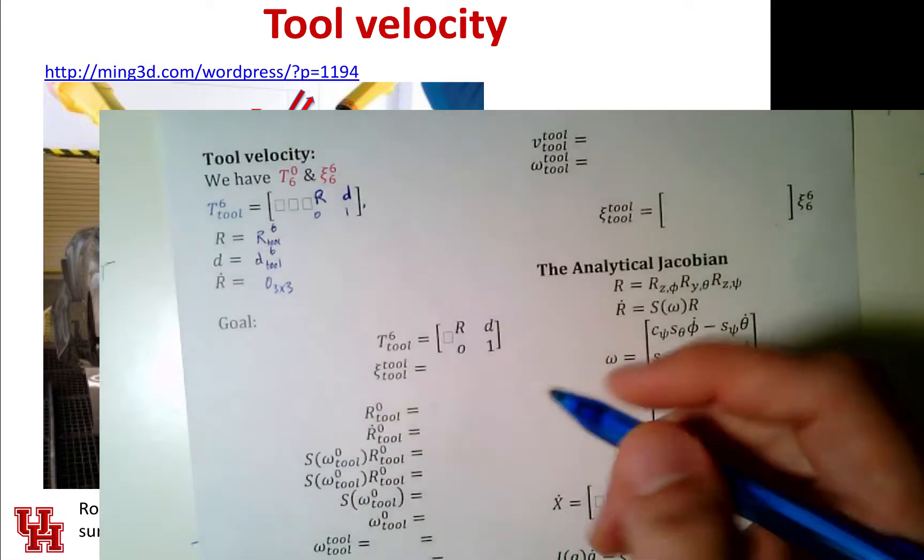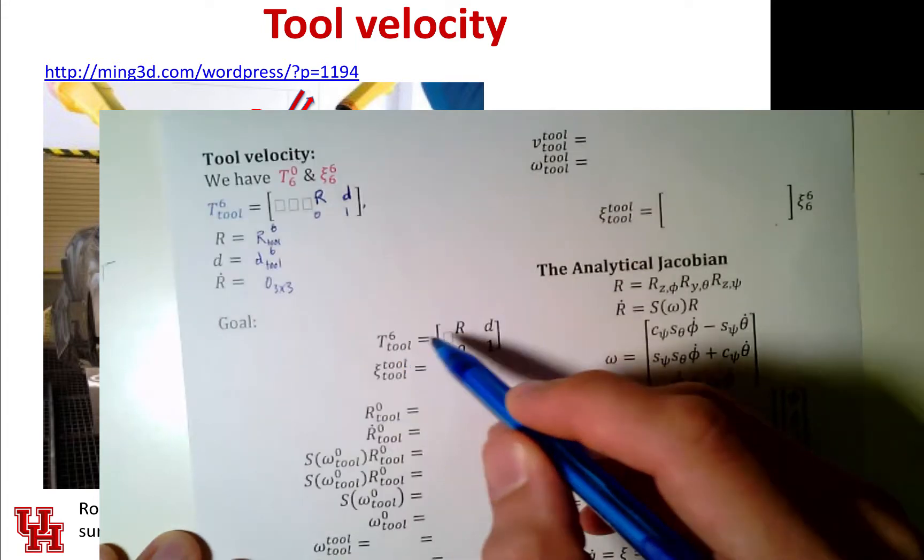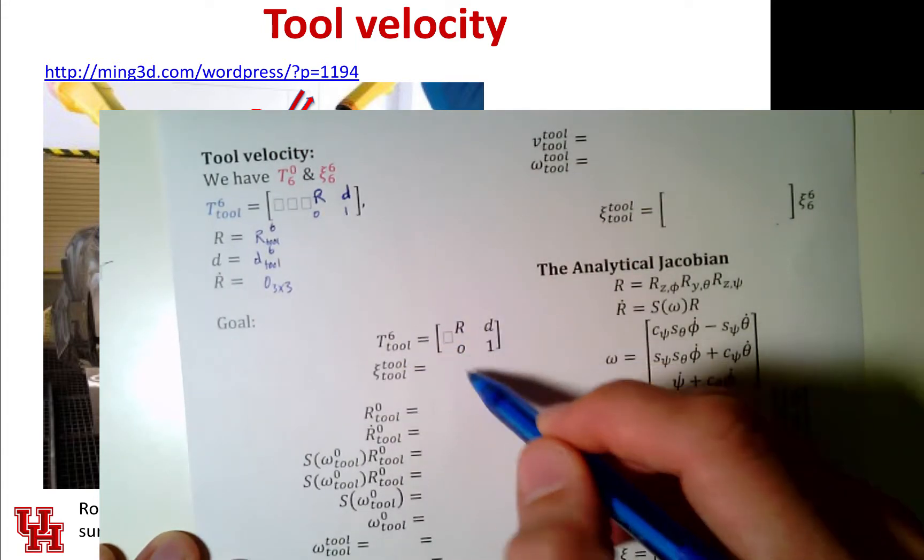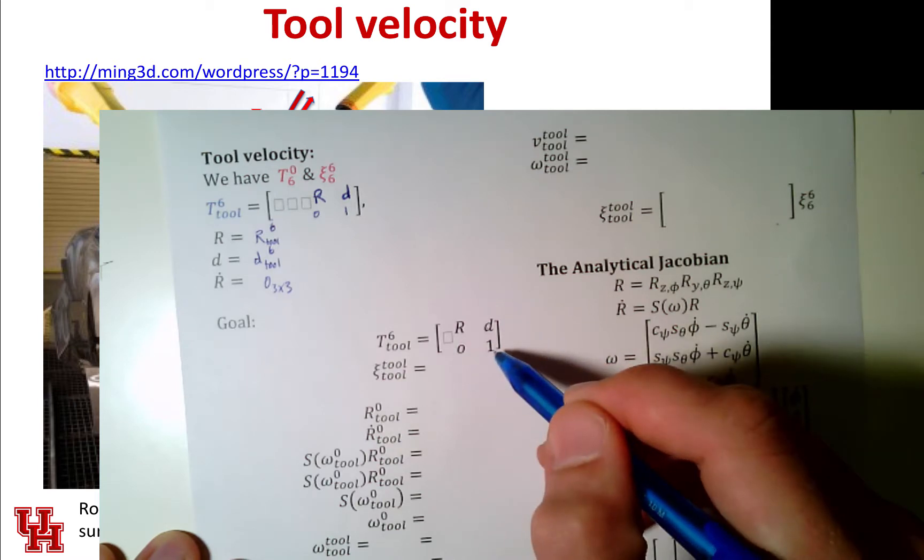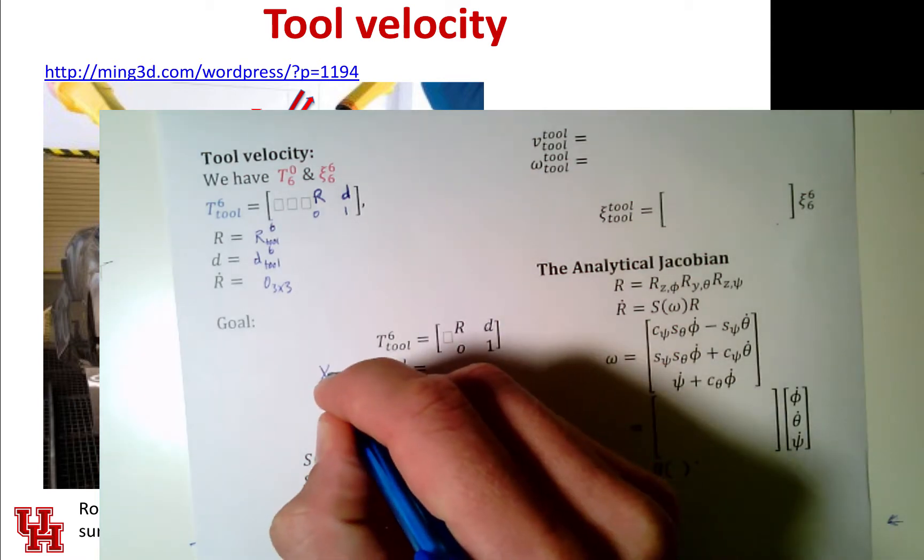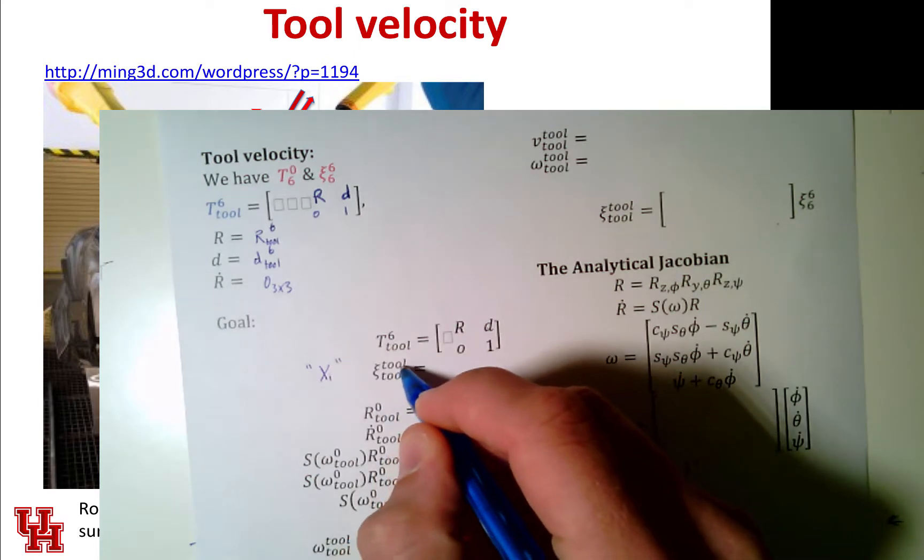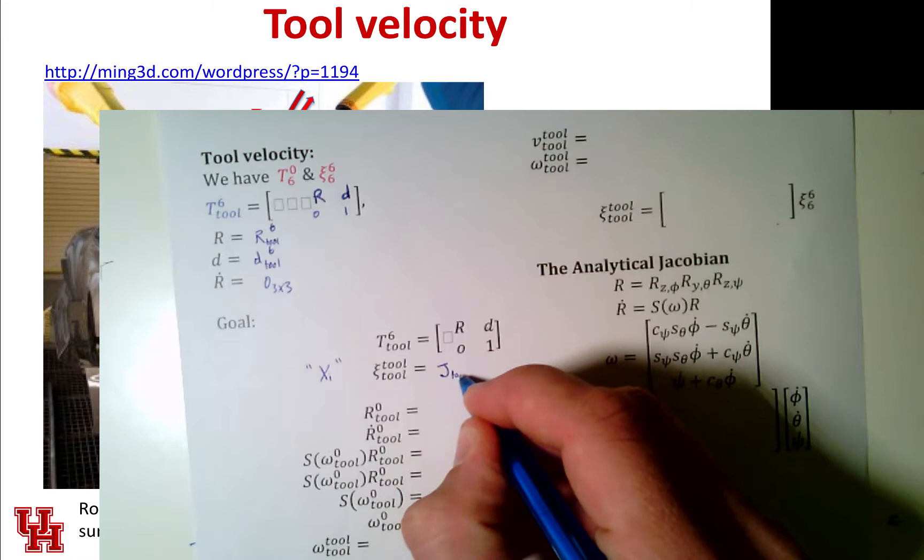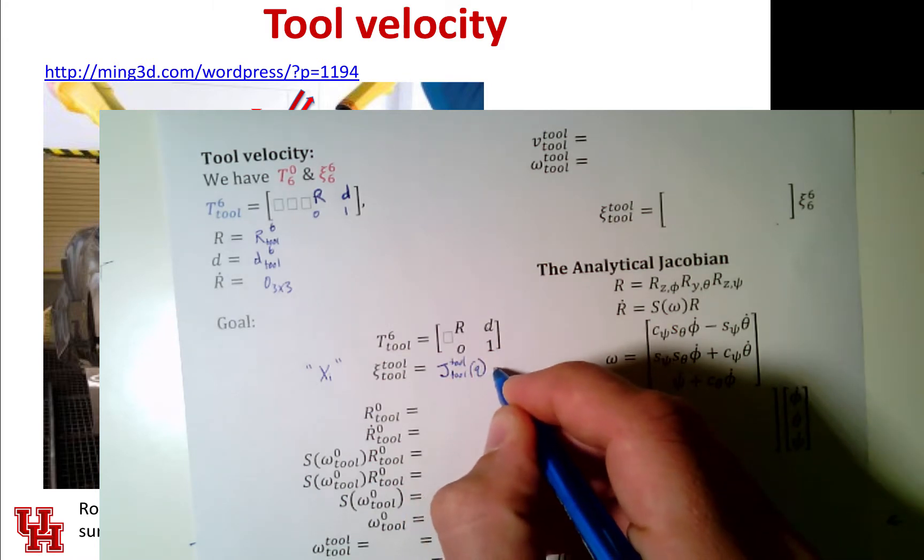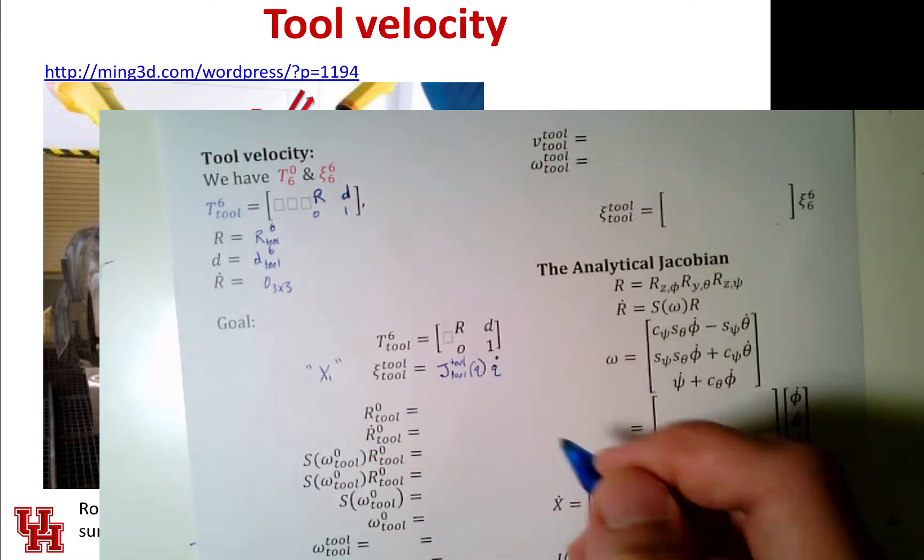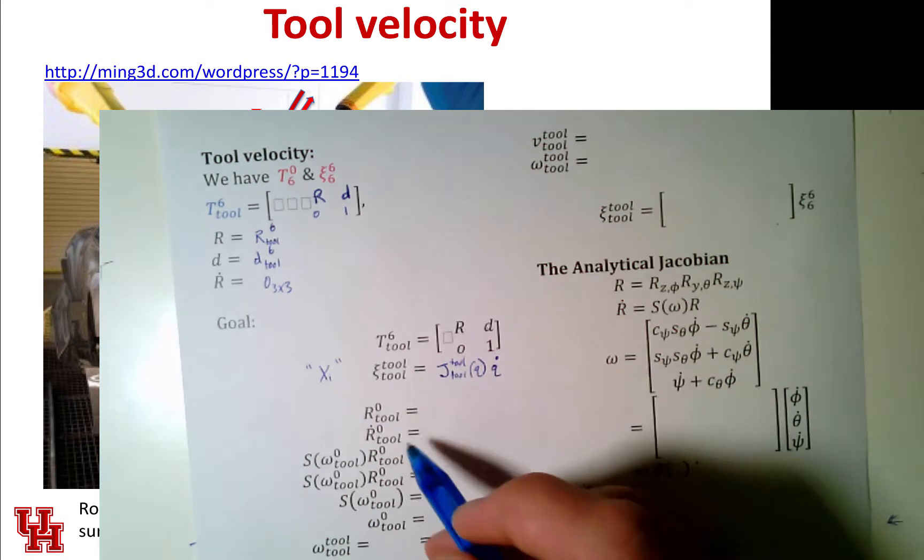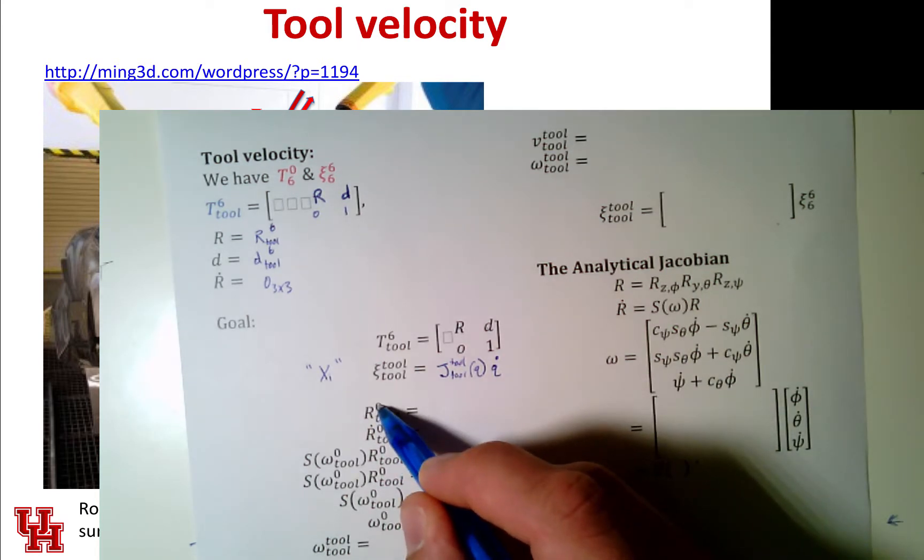So our goal is to be able to figure out what is this t tool in frame six. We need to know what is r, what is d. We know that this is zero zero zero and this is one. This is Greek letter psi of tool in frame tool. Well, that is going to be the Jacobian of tool in frame tool as a function of the configuration q multiplied by q dot. We're going to have to decompose this and take it step by step.